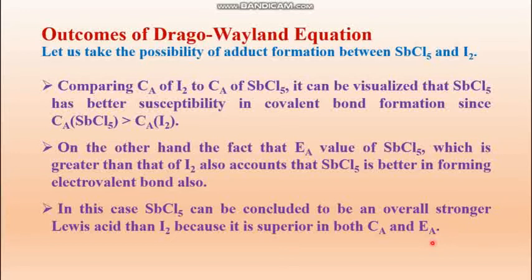So if you face a question asking why SbCl₅ is a stronger Lewis acid than iodine, you have to explain using the Drago-Wayland equation by giving the E_A, E_B, C_A, and C_B values of both acids and then explain these three points.